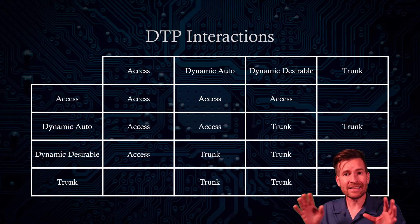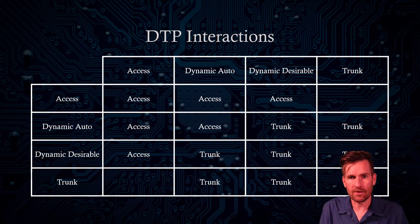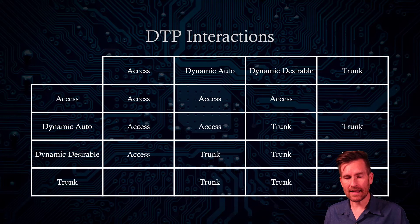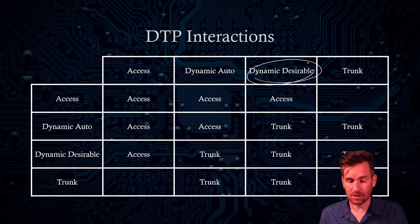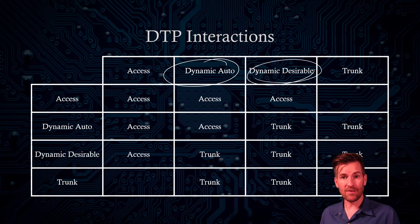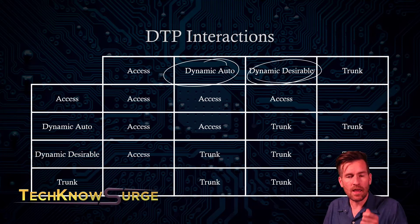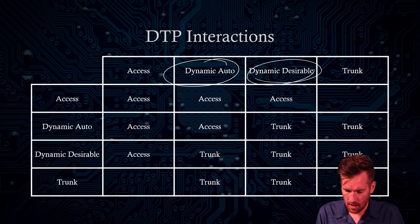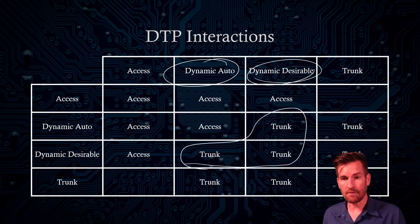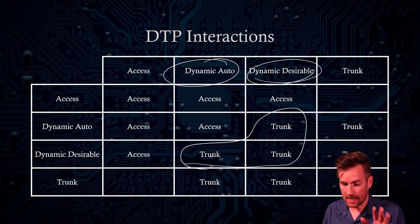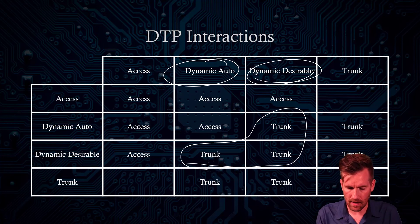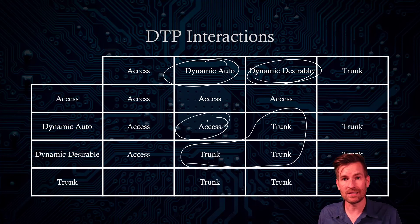What may not be as clear is what happens when a dynamic port connects to another dynamic port. That depends on whether we have dynamic desirable or dynamic auto. If it's dynamic desirable, it's striving to be a trunk port, so it will become a trunk port if it can. When one side is desirable and the other is any dynamic setting, the result is a trunk port. The only time we see an access port between two dynamic ports is when dynamic auto connects to dynamic auto.